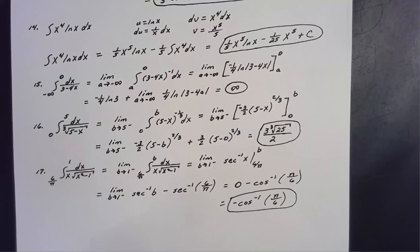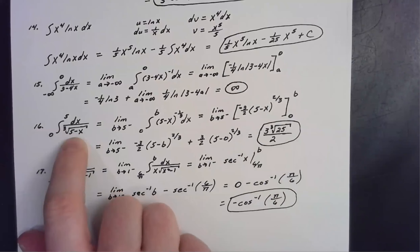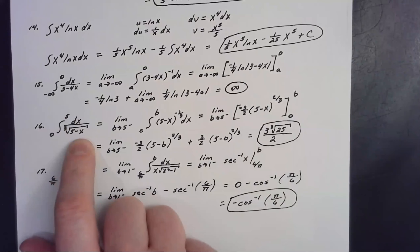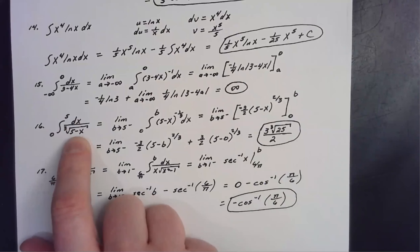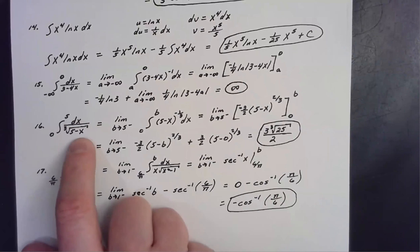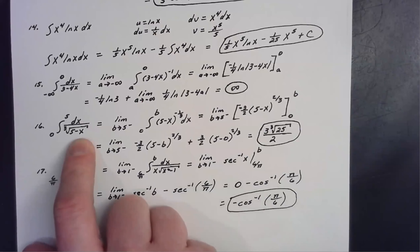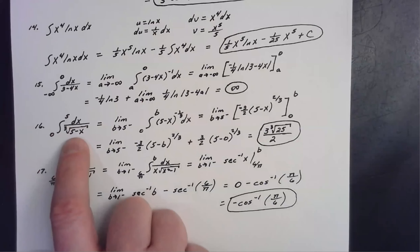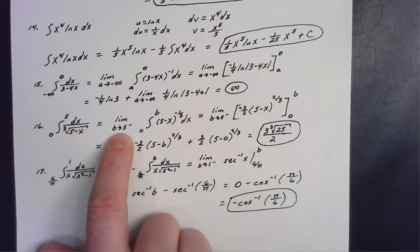For number sixteen, we have a limit of integration where the function doesn't exist. The denominator would equal zero if x = 5, giving a one-over-zero situation — undefined. But the integral from zero to five can still converge; we just need correct notation. Since the issue is at the upper limit, we replace the upper limit with B and write it as the limit as B approaches five from the left.